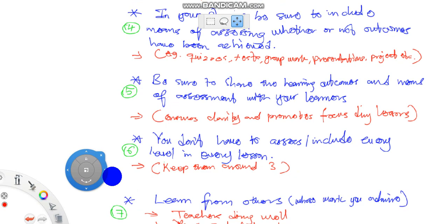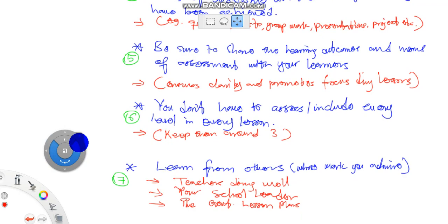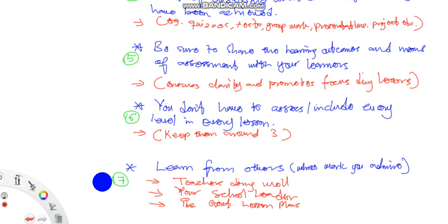But if you share the learning outcomes and means of assessment it serves as a means of holding you the teacher to account. And then sixth, you don't have to assess every level in every lesson. Maybe some lessons can just focus on application or analyzing. You don't have to do everything in every lesson, it's impossible. Keep your objectives around three maximum four.